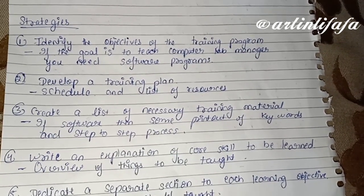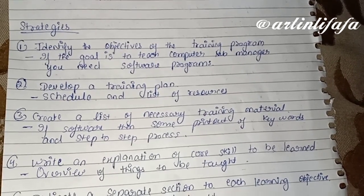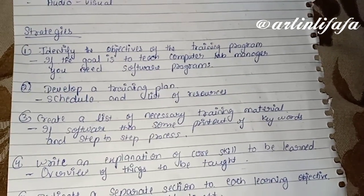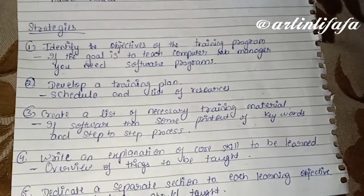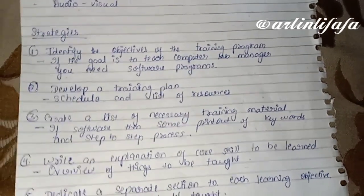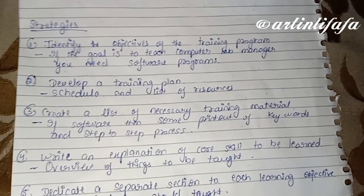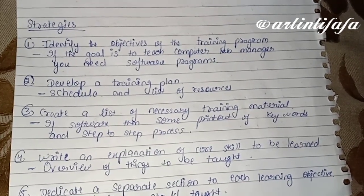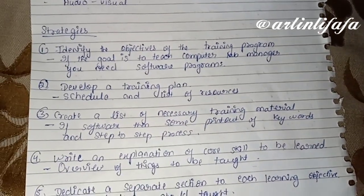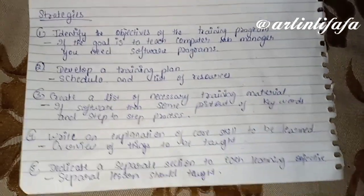जैसे कि अगर तुम्हारा objective है computer managers को teach करना, तो उनके लिए software program की ज़रूरत पड़ेगी — तुम्हारे पास software program होना चाहिए। उसके बाद develop a training plan — एक plan develop होना चाहिए, मतलब list of resources तुम्हारे पास available होनी चाहिए — क्या-क्या चीज़ें तुम्हें चाहिए।